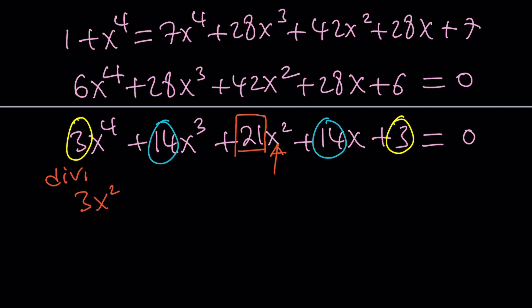So we're going to get 3x squared plus 14x plus 21 plus 14 over x because you're dividing by x squared plus 3 over x squared equals 0.